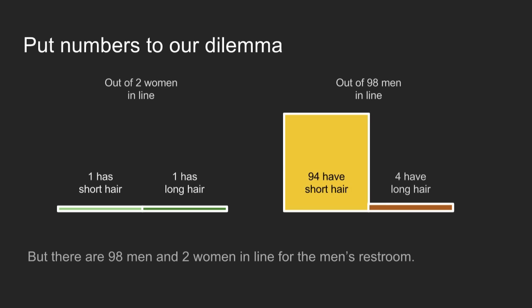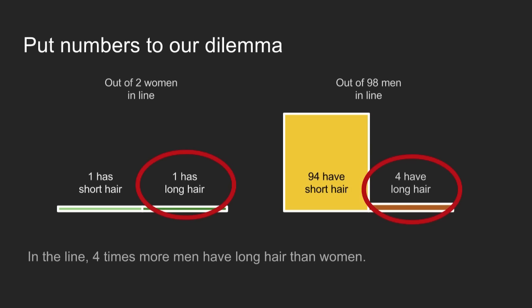This assumption no longer holds when we move to the men's restroom line. Here, let's say there are two women out of every 100 people and 98 men — maybe women keeping their partner's company. It's still half and half long and short hair among the women. But now there are four times as many men with long hair as women with long hair in this group, so the safe money is to bet this person is a man.